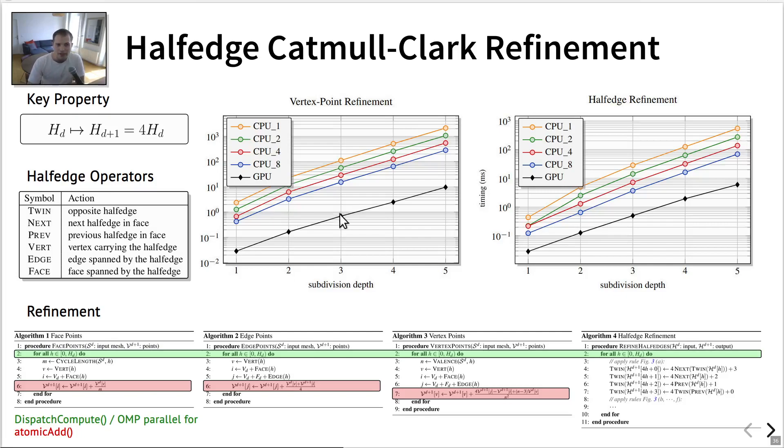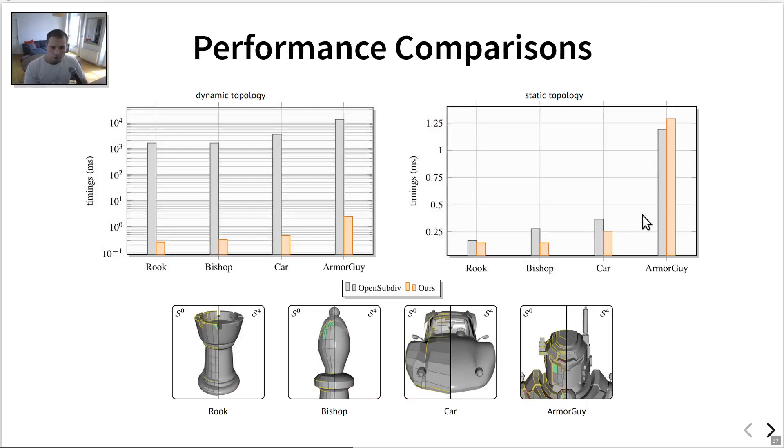And so with these implementations at hand, we started by benching the parallel performances of our algorithm. So we started with a single threaded CPU, and went all the way down to eight threads on a ThreadRipper CPU. And we noticed that for, so the vertex point here is the grouped algorithm one, two, three, and the half-edge refinement is this one. And so what we observed is that for both groups, we get perfect scalability, meaning that the performances increase linearly with respect to thread count. And then we benched also our GPU implementation, which obviously has more than eight threads. And so here, we also benefit from the parallel nature of our algorithm pretty evidently.